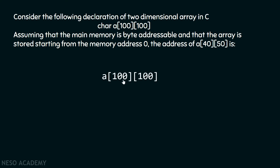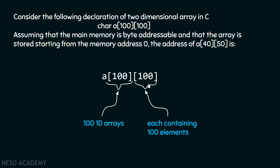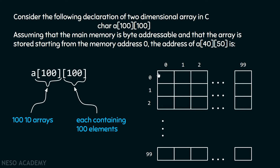We know that A is the array which contains 100 rows and 100 columns. This 100 indicates 100 one-dimensional arrays, and each of these arrays contains 100 elements, and all these elements are of character type. I can pictorially represent this: index always starts from zero, so the first one-dimensional array has index zero and the last has index 99. Similarly, the column index starts from zero and ends at 99, meaning total 100 columns and 100 rows.